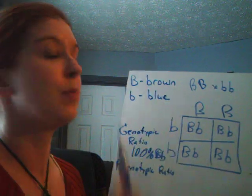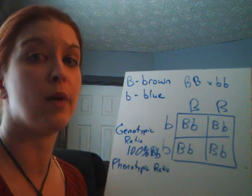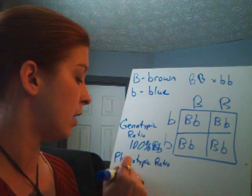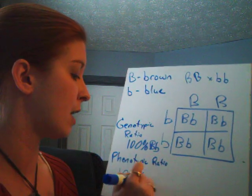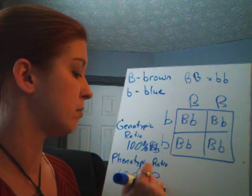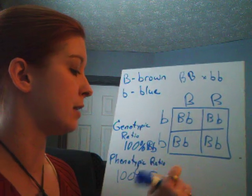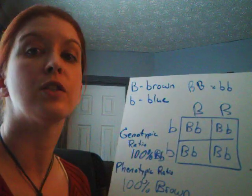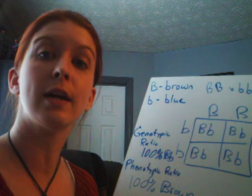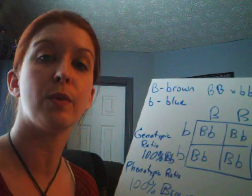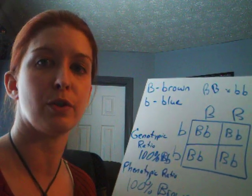So you look back up at the key and we've got brown. The phenotypic ratio is going to be 100% brown eyes. That's one example of a Punnett square. Let's try a couple of different ones with different situations just to make sure you know what you're doing.